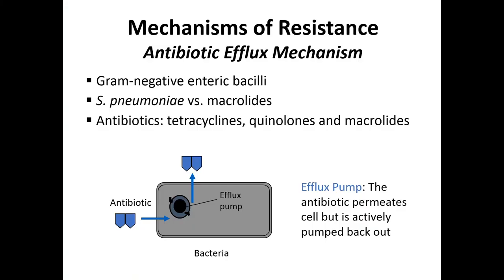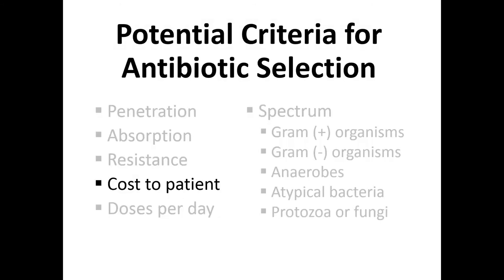The final mechanism is the efflux pump, seen with many gram-negatives and the pneumococcus. Antibiotics affected include tetracyclines, quinolones, and macrolides. The antibiotic enters the cell but is pumped back out — like bailing water in a leaking rowboat: if you bail faster than water enters, you stay afloat. The takeaway is that understanding resistance mechanisms makes it important to obtain cultures and susceptibilities to guide therapy.